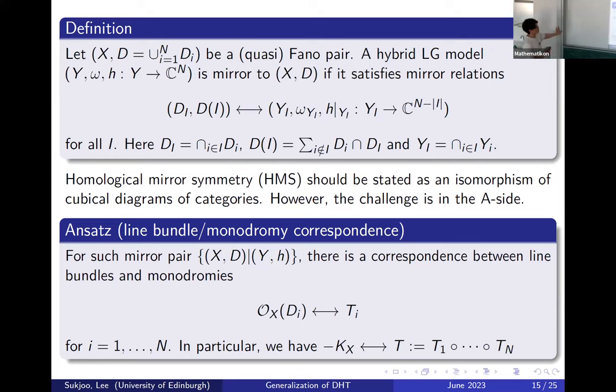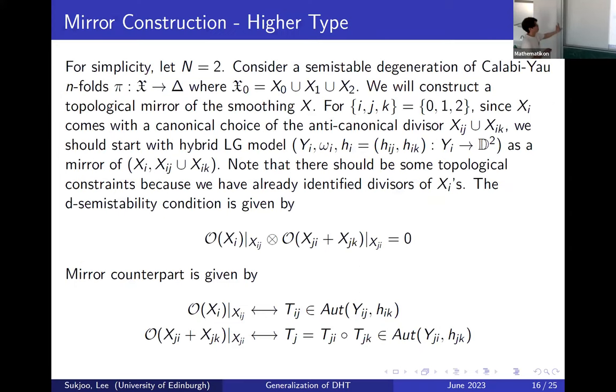This is a story for monodromy following with the choice of certain monodromy data. Now we can actually talk about how to generalize the DHT construction. Now I consider a semi-stable degeneration of Calabi-Yau with three components. Then I want to construct the mirror of this. We have three components, and each X_i comes with the canonical choice of anti-canonical divisor, which is the union of the intersection with other components.